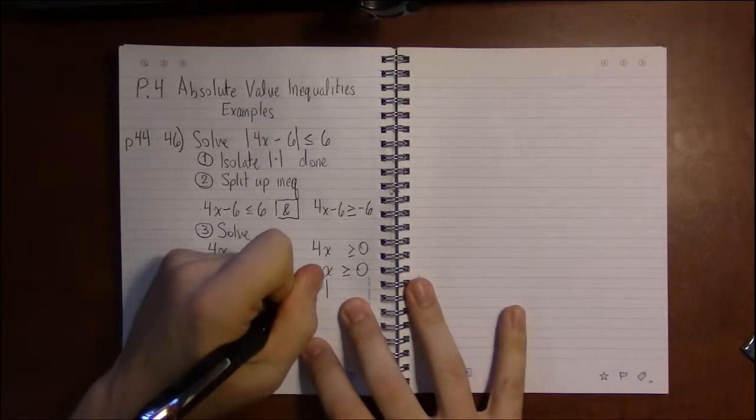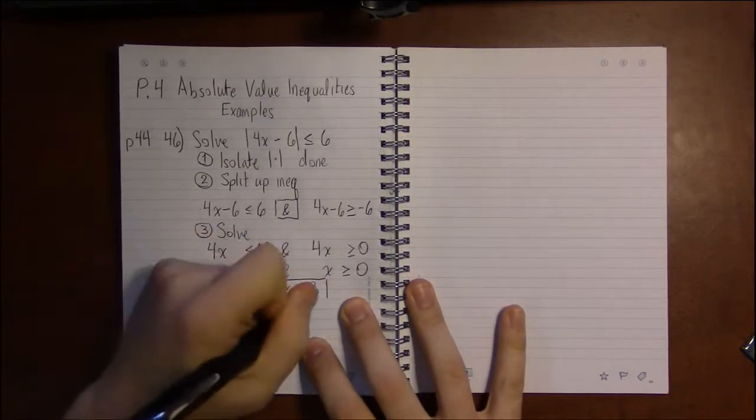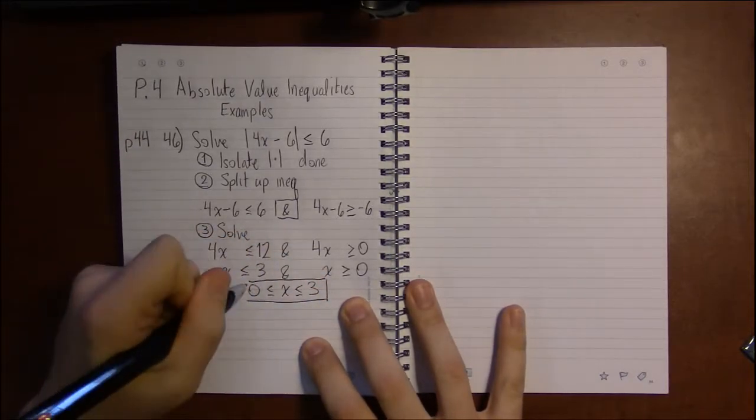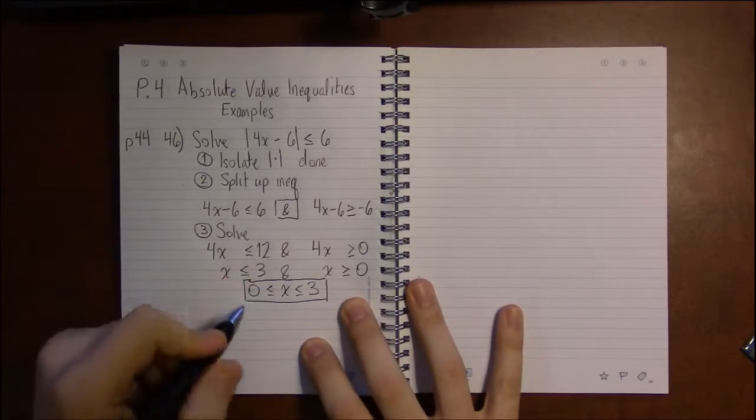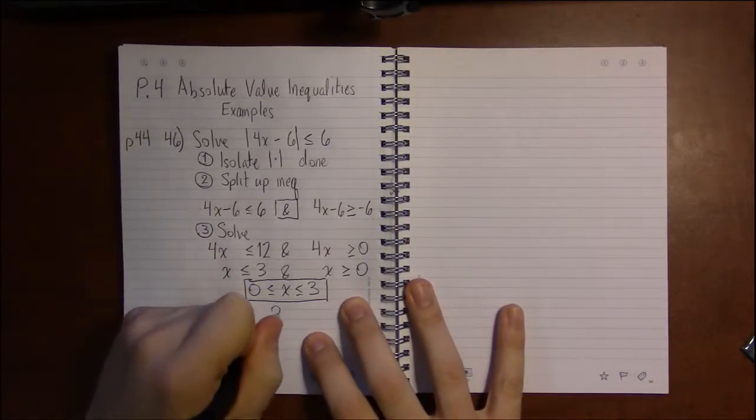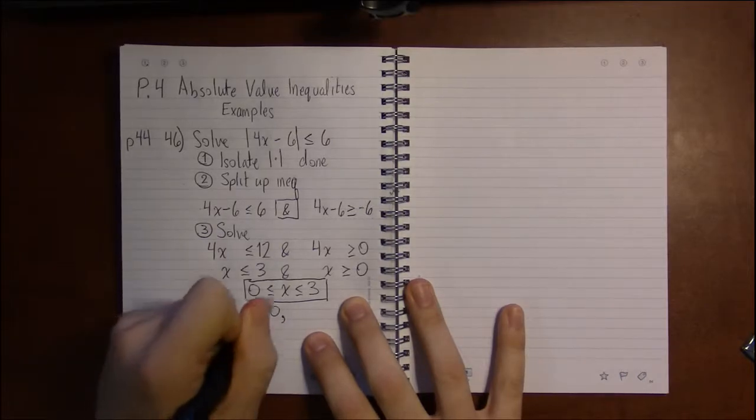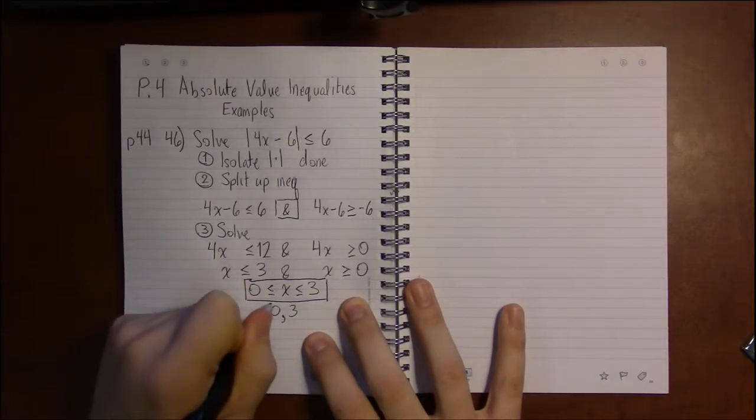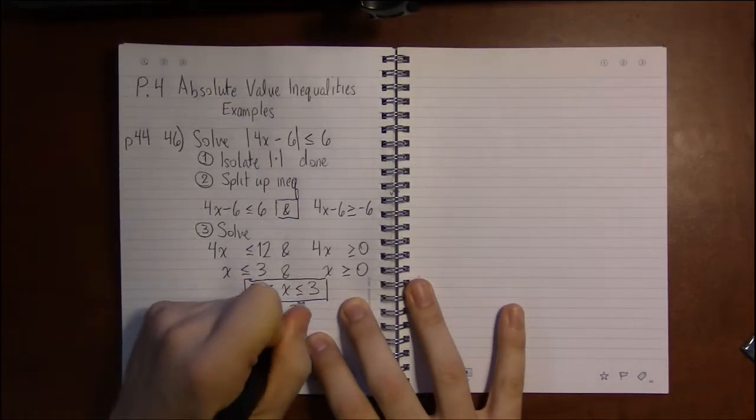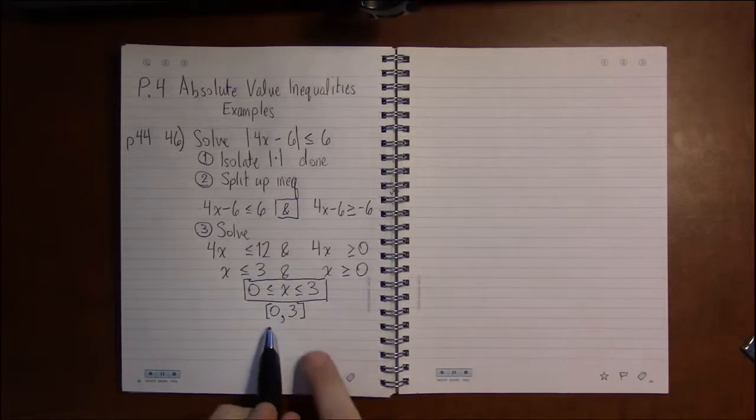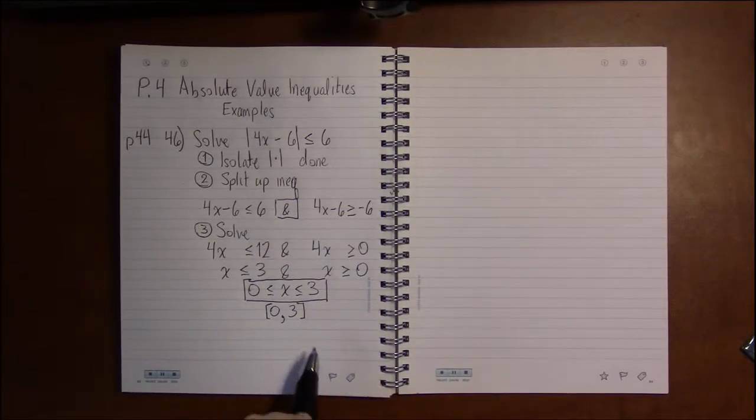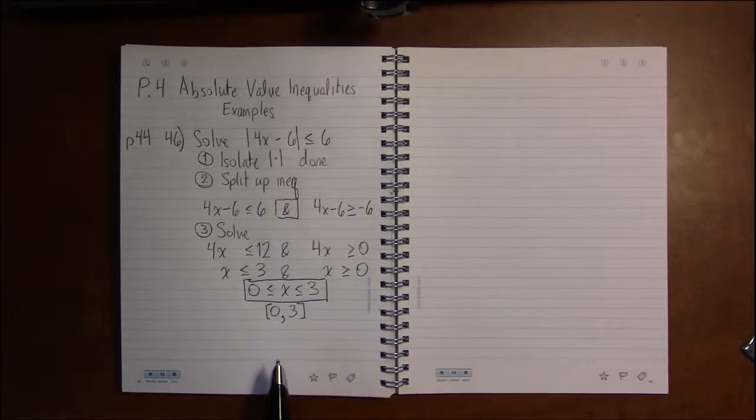This is a perfectly acceptable answer, the way I've written it here. If you'd like to write this in interval notation, the left endpoint is 0, the right endpoint is 3, and we're including both. So I put brackets around the left and the right. That's a perfectly fine way to write the answer. Either way you want to write it is fine by me.